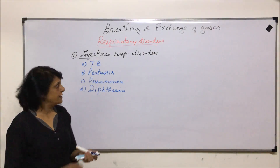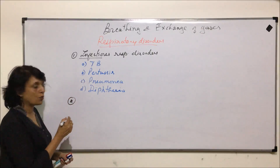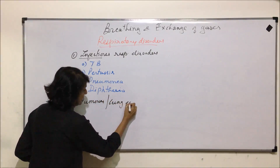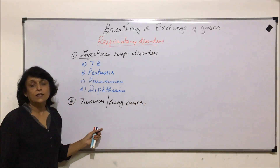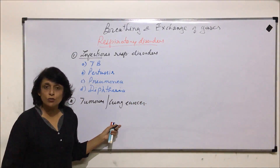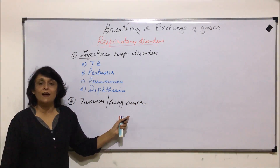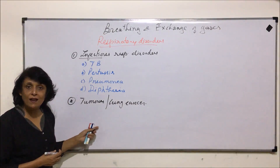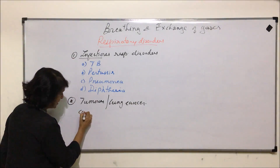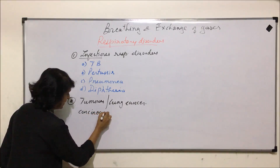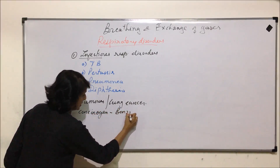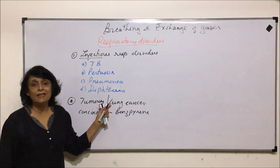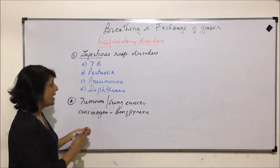The second category of respiratory disorders is tumors or lung cancer. The most common cause is a carcinogen. A tumor can form in the lungs or respiratory tract. One such substance known to cause lung cancer is benzpyrene, a carcinogen present in tobacco smoke.